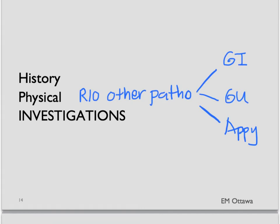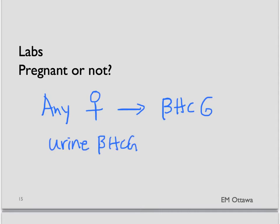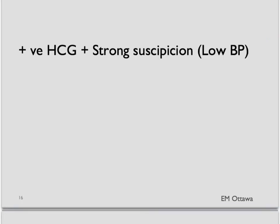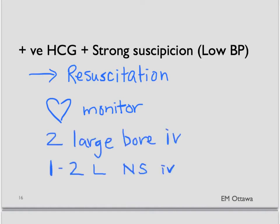Next, investigations. One of the first tests we need is whether the patient is pregnant. Any woman of childbearing age with abdominal pain, vaginal bleeding, or syncope needs a pregnancy test. The fastest way is a urine beta-HCG test, which should be positive 8-10 days after conception unless the urine is very diluted. If this is positive and we have strong suspicion of ectopic pregnancy — particularly if she is hypotensive — we need to move her quickly into a monitored area, start resuscitation, hook her up to a cardiac monitor, and start two large-bore IVs. If she is hypotensive, 1-2 liters of saline would be given and we keep checking vital signs. If vitals do not normalize, blood might be needed.